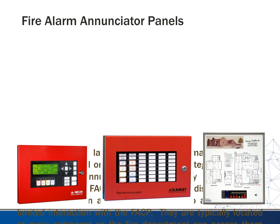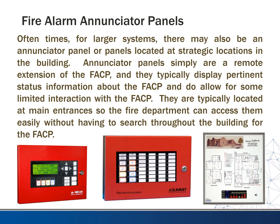Another related item is enunciator panels. For large systems in large buildings, there may also be an enunciator panel or panels located at strategic locations in the building. An enunciator panel is simply a remote extension of the fire alarm control panel. These panels typically display pertinent information about the fire alarm control panel and allow for some limited interaction. They're usually located at the main or common entrances of the building, and you'll often coordinate with the fire department on where these are supposed to be. This way the fire department can access information from the fire alarm system easily without having to run through the building to find the control panel — it basically acts as a remote control device that mimics the information from the fire alarm control panel.